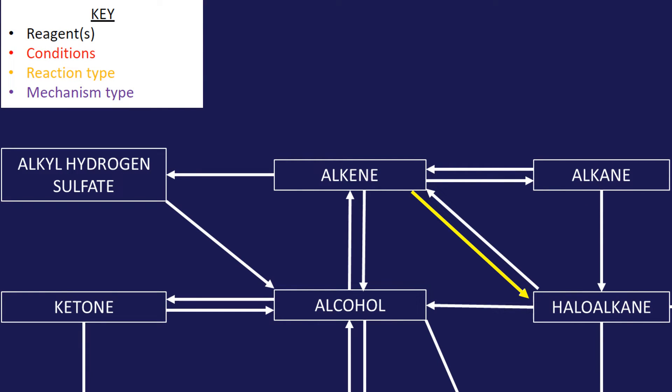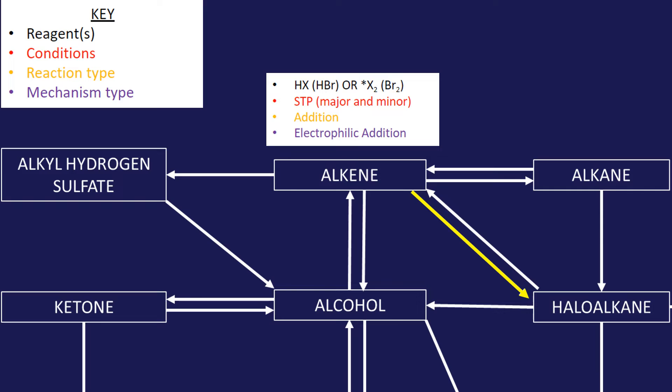We're going to start then with this nice arrow here: alkene to haloalkane. It can be HX or X2. If it's HX, we need to be or might need to be careful with the major and the minor product because they love this in exams. This is HBr, this is an alkene. Say hi, nice to meet you alkene. And then HBr comes along. HBr is polar and this is the first step of the mechanism.